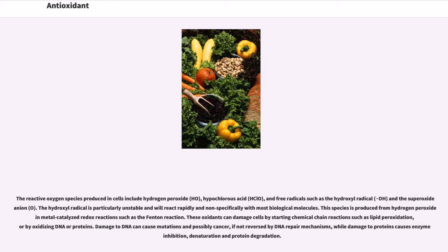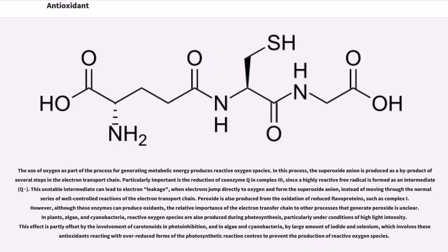This species is produced from hydrogen peroxide in metal catalyzed redox reactions such as the Fenton reaction. These oxidants can damage cells by starting chemical chain reactions such as lipid peroxidation, or by oxidizing DNA or proteins. Damage to DNA can cause mutations and possibly cancer, if not reversed by DNA repair mechanisms, while damage to proteins causes enzyme inhibition, denaturation and protein degradation.